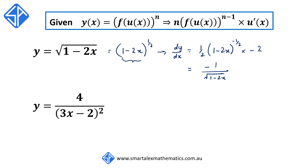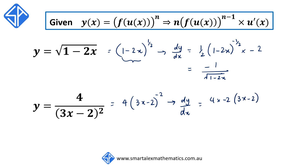For our last example we've got y is equal to 4 divided by 3x minus 2 in bracket squared. We rewrite this using negative indices as 4 times 3x minus 2 to the power of negative 2. When we differentiate this, the power of negative 2 comes to the front, we reduce the original power by 1 so minus 2 minus 1 is negative 3, and we also have to multiply by the derivative of what's inside the bracket, which in this case is 3. Multiplying all these together we get negative 24 over 3x minus 2 cubed.